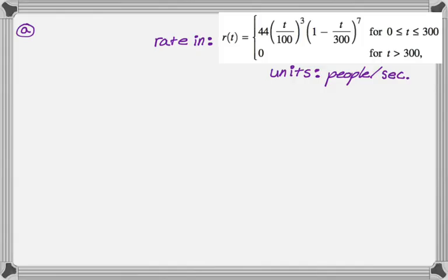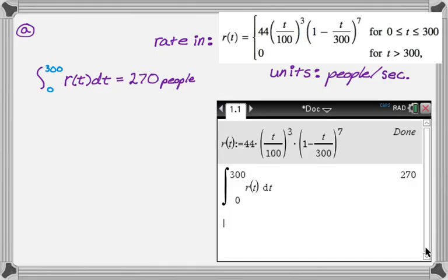In this part we want to find how many people enter the line for the escalator during the time, so that's actually just going to be the integral of the rate-in. So that's going to look like the integral, the time frame is 0 to 300, so our bounds will be from 0 to 300, and we're going to integrate the rate-in, so that's going to be R of T DT. Grab a calculator and it tells you that that definite integral is 270, and it should be people. This is what my calculator looked like at the end of that, and that's part A.